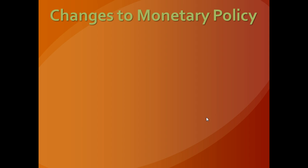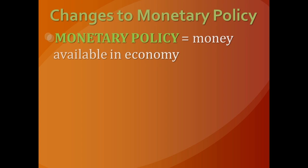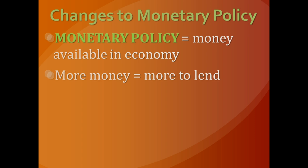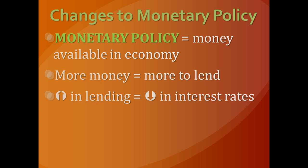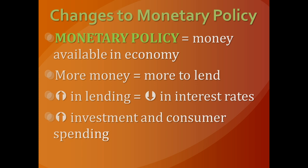There's one more type of policy called monetary policy, managed by the Federal Reserve. Monetary policy is about determining how much money is available in the economy. If the Federal Reserve increases the money supply, there's more money available to be lent through the banking system, which reduces interest rates. When interest rates drop, consumption and investment become less expensive, causing an increase in both components of GDP and a right shift in aggregate demand. If the Federal Reserve reduces the money supply, interest rates rise, reducing investment and consumer spending, causing aggregate demand to shift to the left.